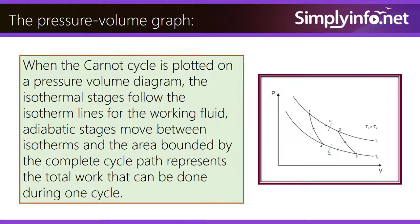The Pressure Volume Graph: When the Carnot cycle is plotted on a pressure volume diagram, the isothermal stages follow the isotherm lines for the working fluid. Adiabatic stages move between isotherms and the area bounded by the complete cycle path represents the total work that can be done during one cycle.